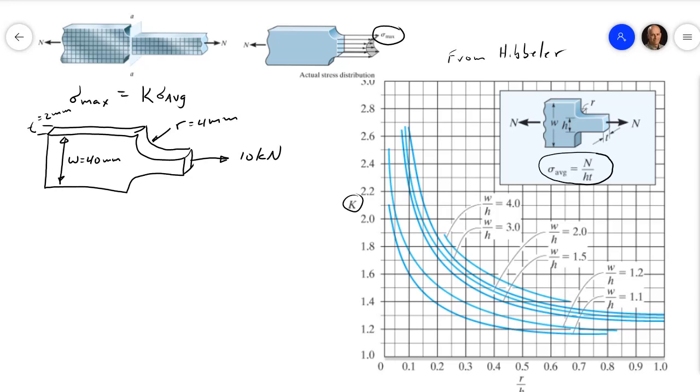So the key ratios we need to calculate are R over H, which will be 4 over H. H is here, and so that will be 40 minus 2R, so that's 32, and so 0.125.